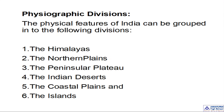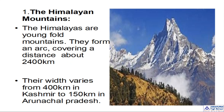The physiographic divisions of India: number one, Himalayas; number two, northern plains; number three, peninsular plateau; number four, the Indian deserts; number five, the coastal plains; and number six, the islands. We are going to learn about these physiographic divisions one by one. Let me start with the first and foremost — the Himalayas. Just before I told you how the Himalayas were formed from the Tethys Sea, some 70 million years ago.